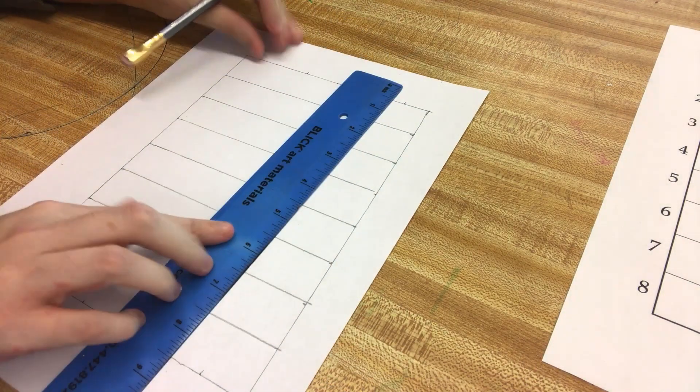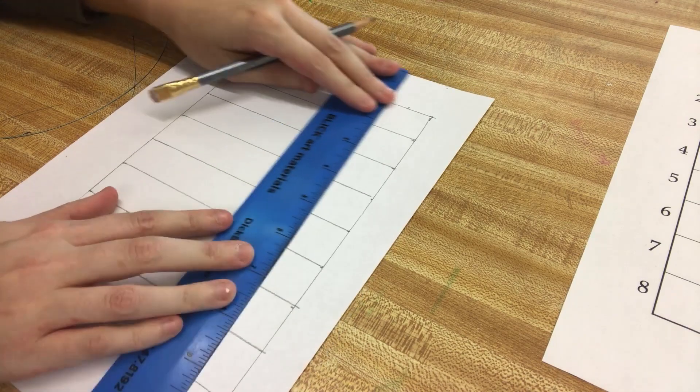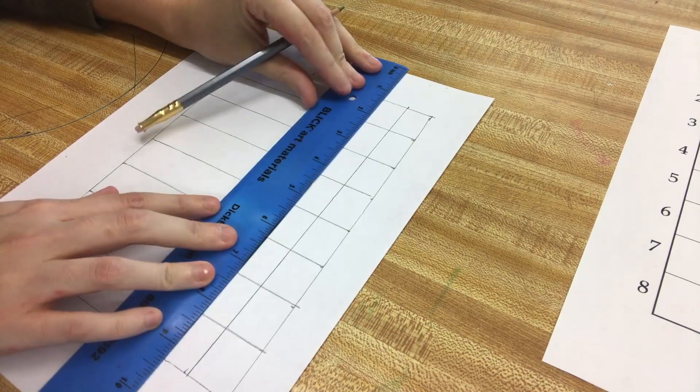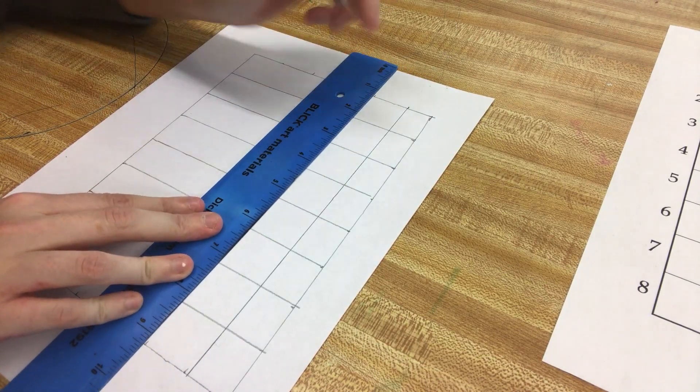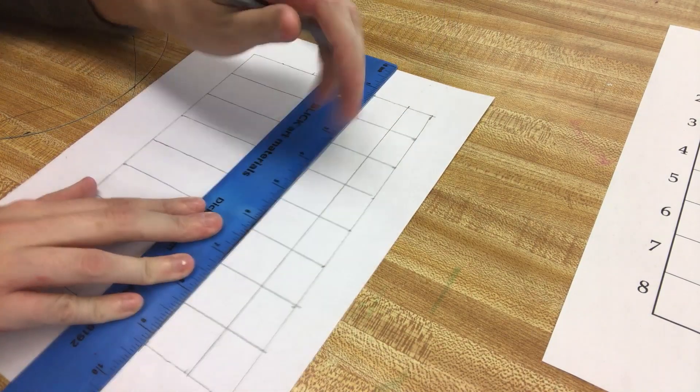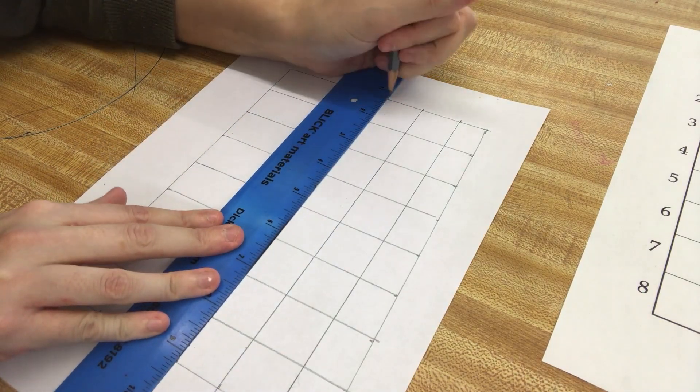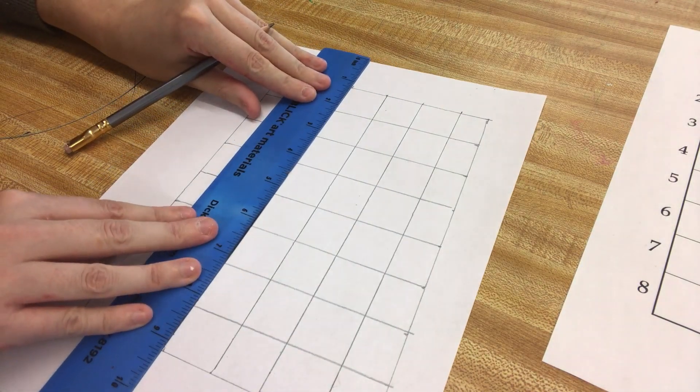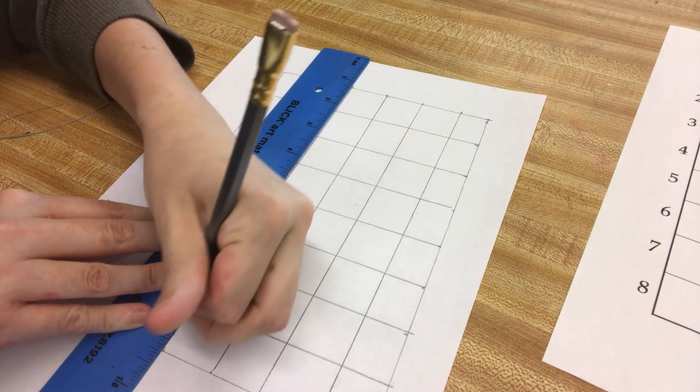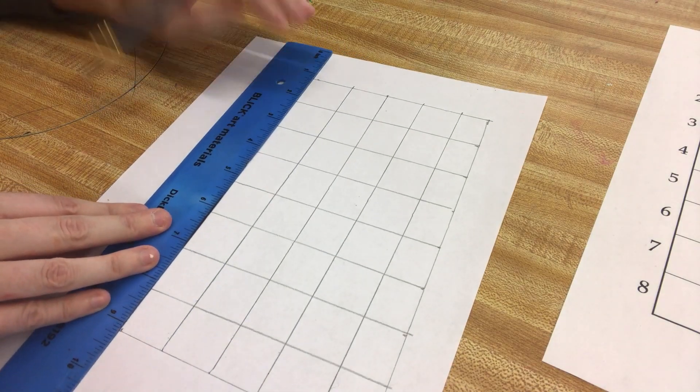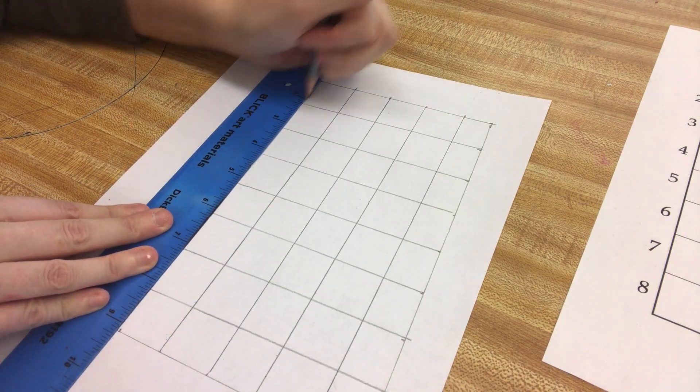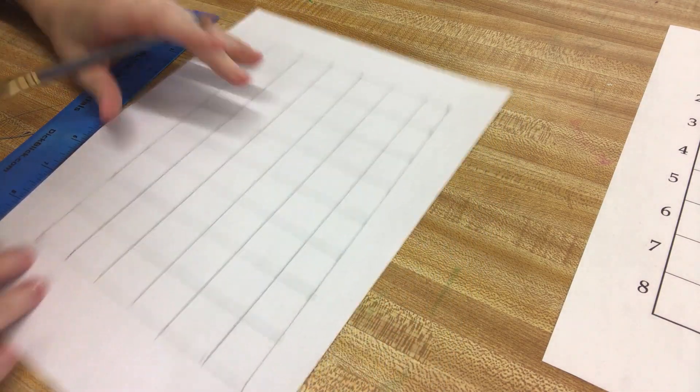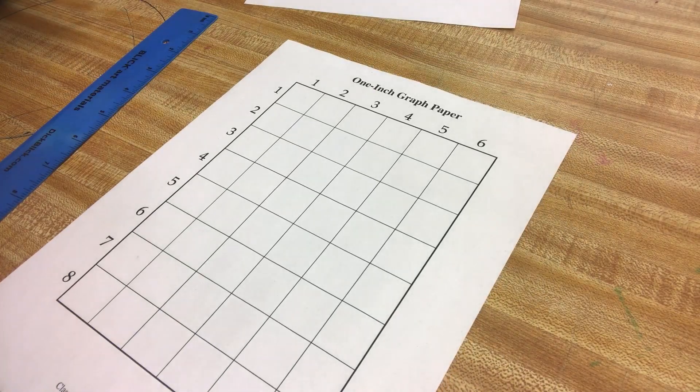Then I'm going to put the ruler this way and start connecting the dots like this. There we go. Now we have a grid just like how the face-to-face students have.